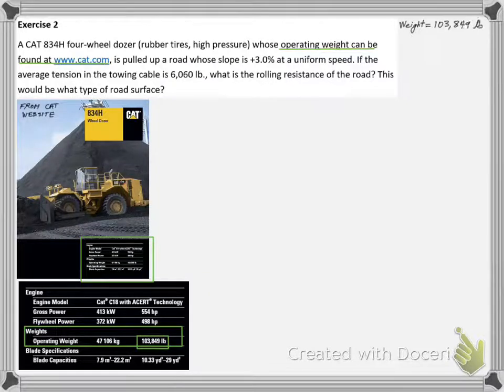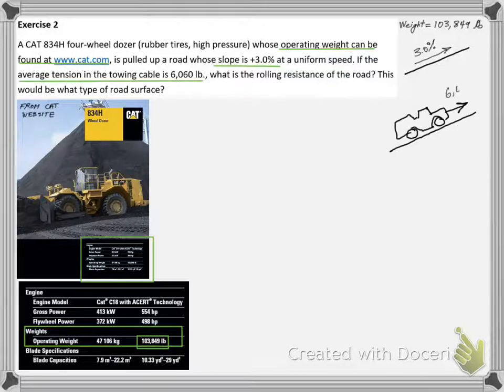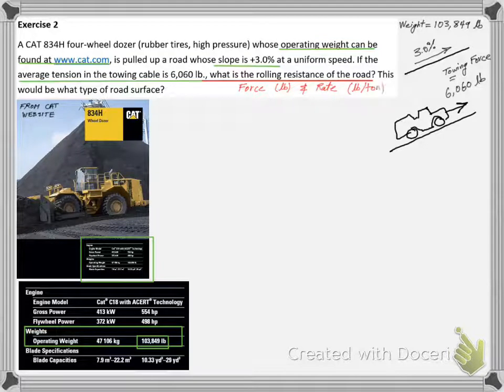We are looking for the operating weight of the dozer, which turns out to be 103,849 pounds. The dozer is pulled at an upward grade of 3 percent. The towing force was measured to be 6,060 pounds. So we need to calculate the rolling resistance of the road.